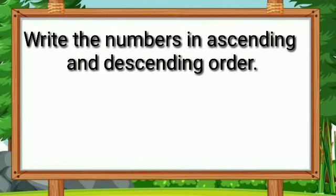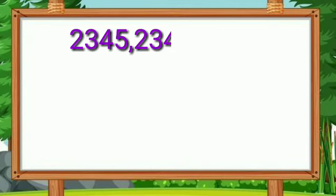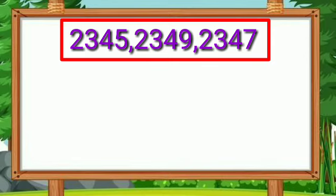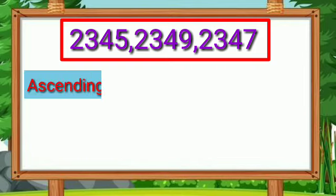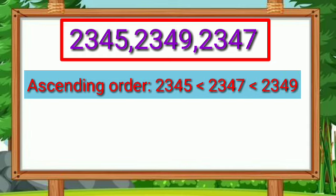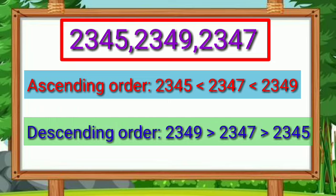Write the numbers in ascending and descending order. Numbers are given: 2,345, 2,349, and 2,347. Let's arrange firstly in ascending order: 2,345 is smaller than 2,347 and 2,347 is smaller than 2,349. In descending order: 2,349 is greater than 2,347 and 2,347 is greater than 2,345.